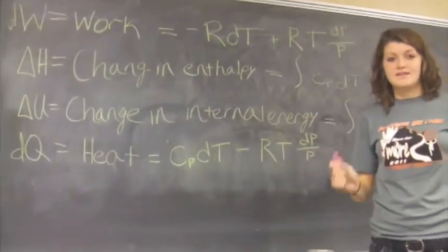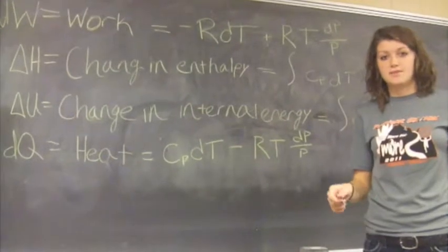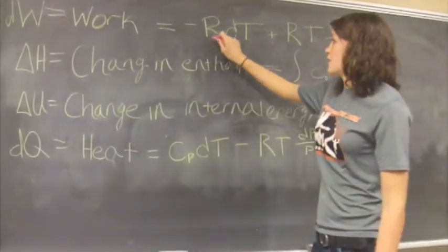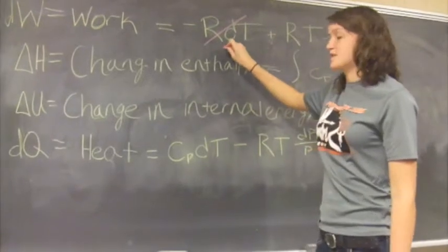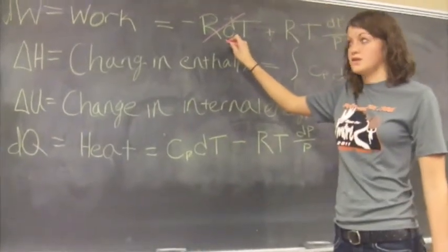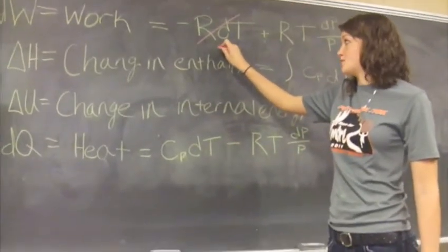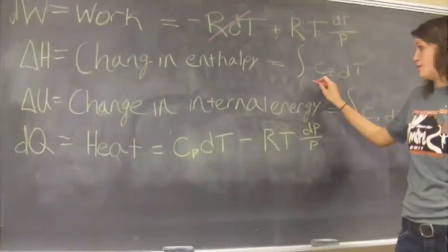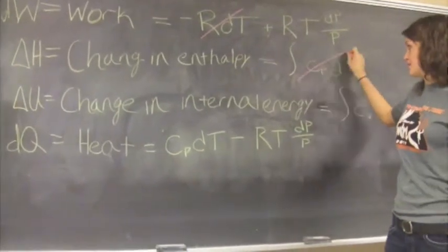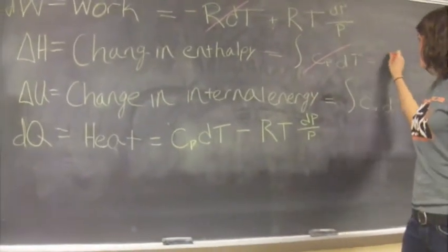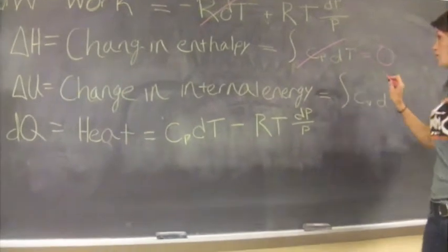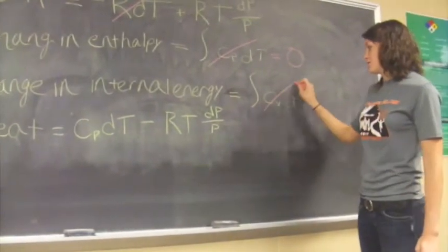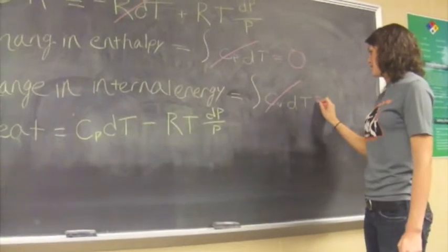Isothermal processes means that the change in temperature is equal to zero. So this factor drops out because when you integrate it, it's going to be T2 minus T1, which is zero, because the temperature stays the same. Delta H is completely reliant on the change in temperature, so this drops out and it's just equal to zero. And then the change in U is the exact same thing — it depends on the change in temperature, so it drops out. It's just equal to zero.